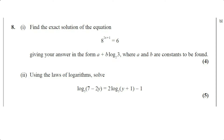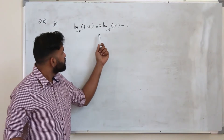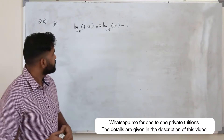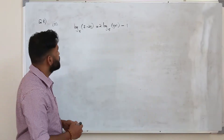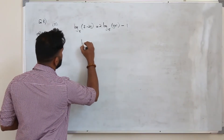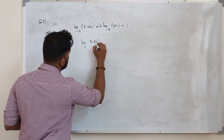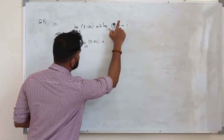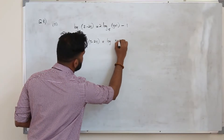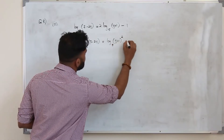Part 2, using the laws of logarithms, solve log(7 minus 2y) to the base 5 equals 2 log(y plus 1) to the base 5 minus 1. This part carries 5 marks. Put all the logarithmic functions to one side of the equation. You can write 2 log(y+1) as log(y+1) squared to the base 5, then move it across, giving log(7−2y) to the base 5 minus log(y+1)² to the base 5 equals minus 1.